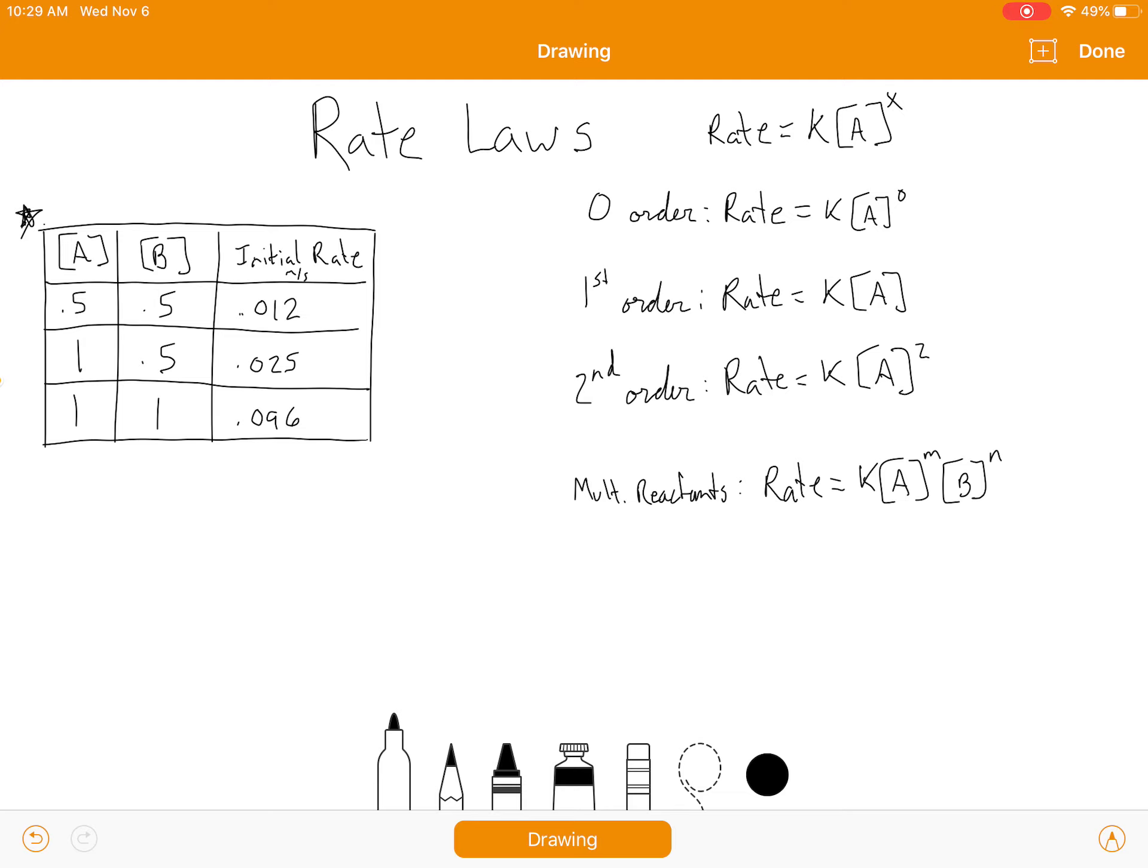So looking at the example that I have over here, there are multiple reactants. We want to find the rate law for that reaction. Well, since there's multiple reactants, we're going to use this. So that means that, go ahead and just write it out as is rate equals K times A raised to something. I'm going to leave a space and B raised to something else. Well, how do I figure out what the order is?